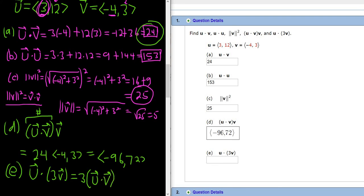You don't have to do this. You could just take the 3 and multiply it by the v and then compute the dot product. Or you can take this shortcut. We know that u dot v is 24 from part a. So this is 3 times 24. And that's equal to 72.